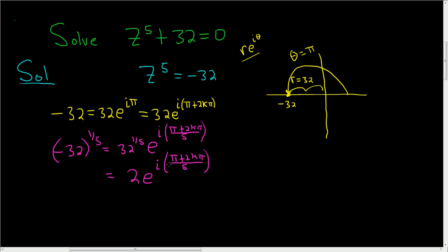Now we can specify values. We're going to have 5 roots: k equals 0, 1, 2, 3, 4.